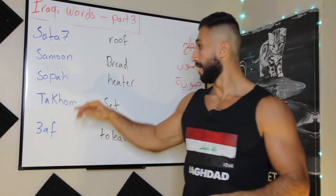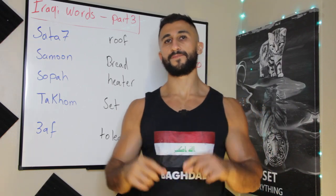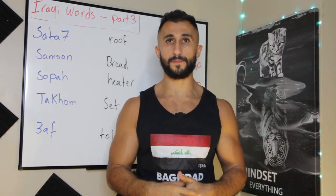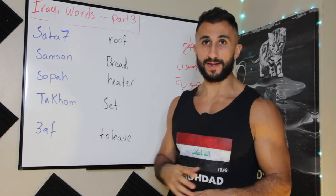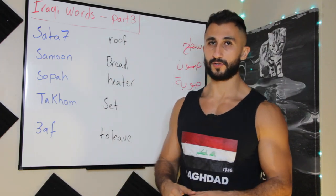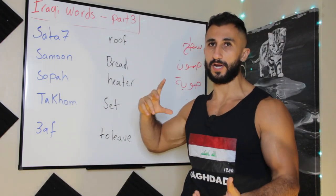The next word is 'sammoon' — this is a type of Iraqi bread that's shaped differently. I'll show you a picture. For example: 'ani ahib aakul sammoon a-suba' — I love to eat sammoon bread in the morning. 'Suba' means morning. It sounds similar to 'satah' but uses different letters.